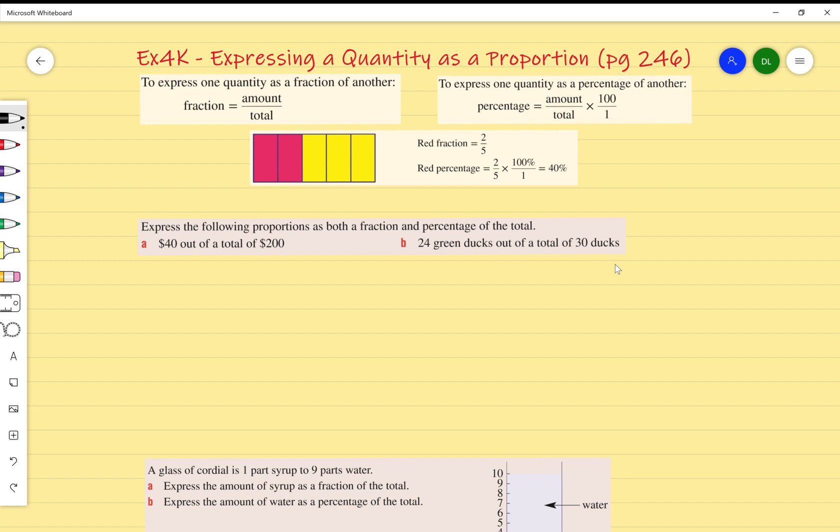The formula we've got here is: fraction equals amount over total. The amount is our numerator and the total is our denominator. I want to talk about how the fraction actually shows us a representation.